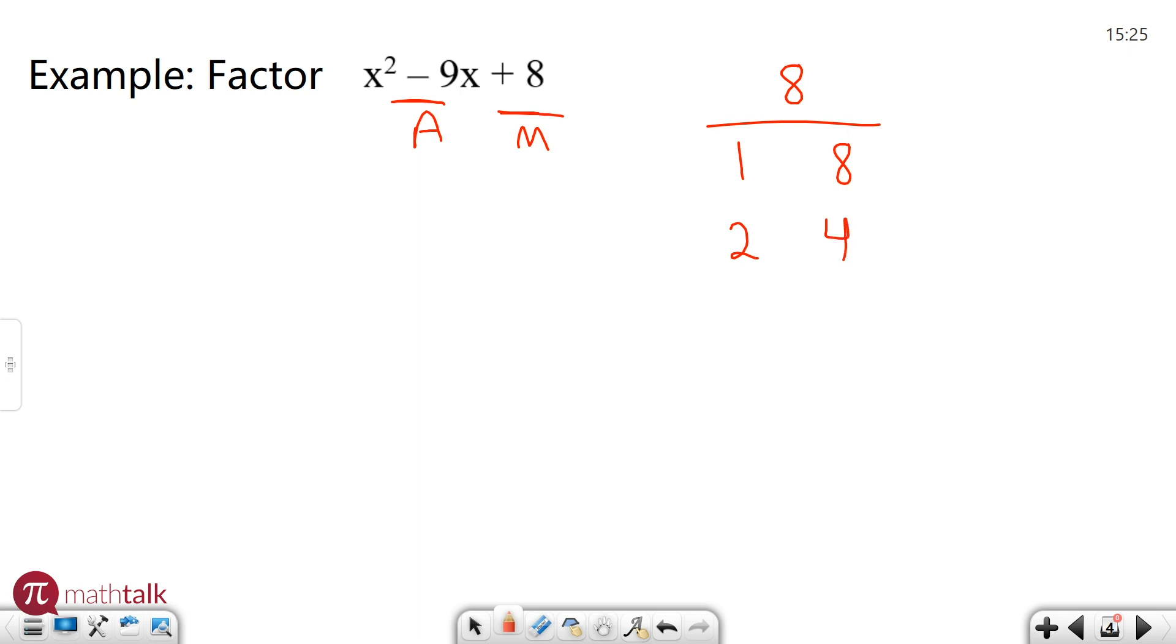Well if I look at 1 and 8, let's say they were both negative because they can be negative or positive. Negative 1 minus 8. Negative 1 minus 8 is negative 9. That's perfect. That's what I want. These aren't going to work. So I know my two numbers. Let's plug them into our binomials.